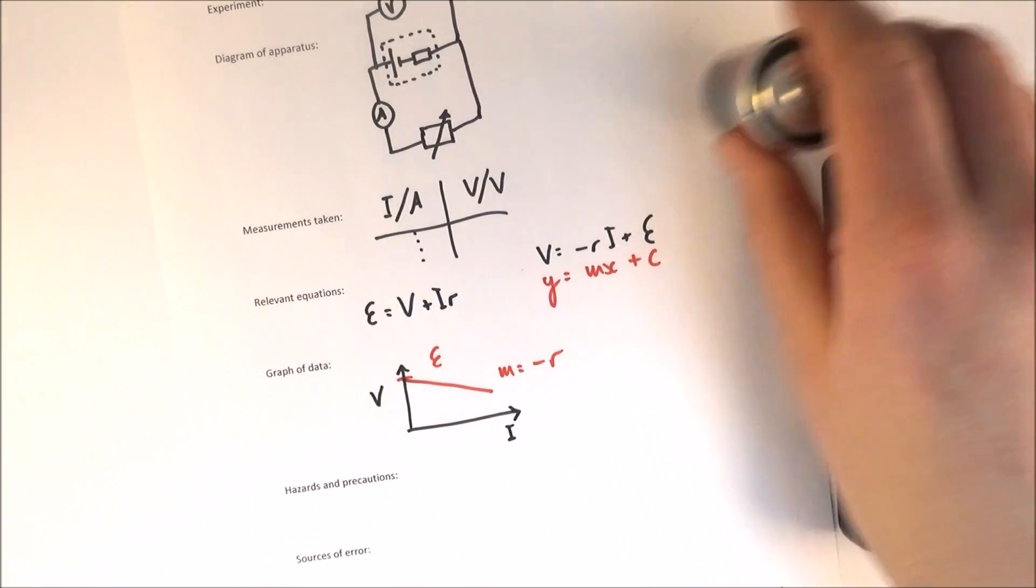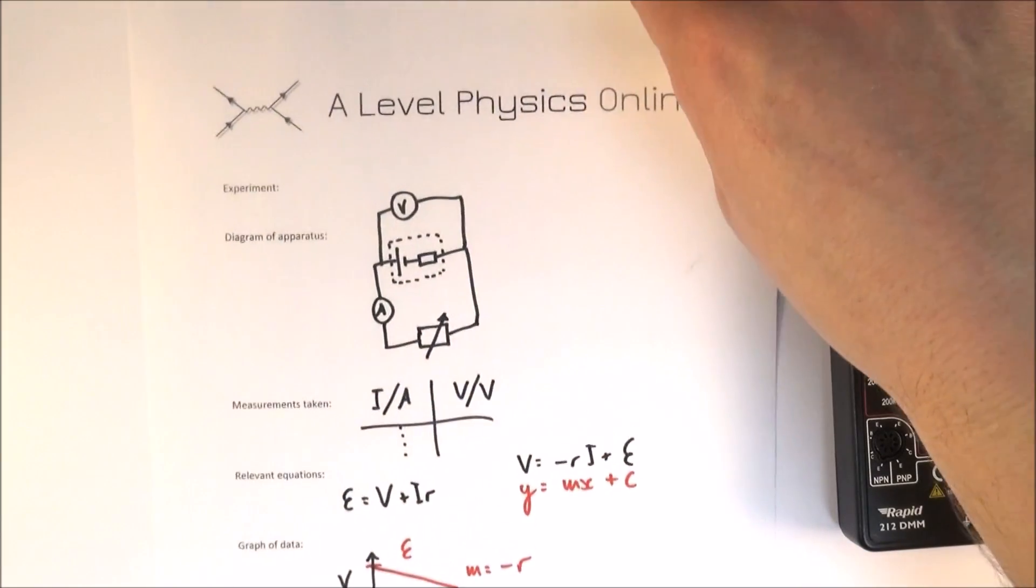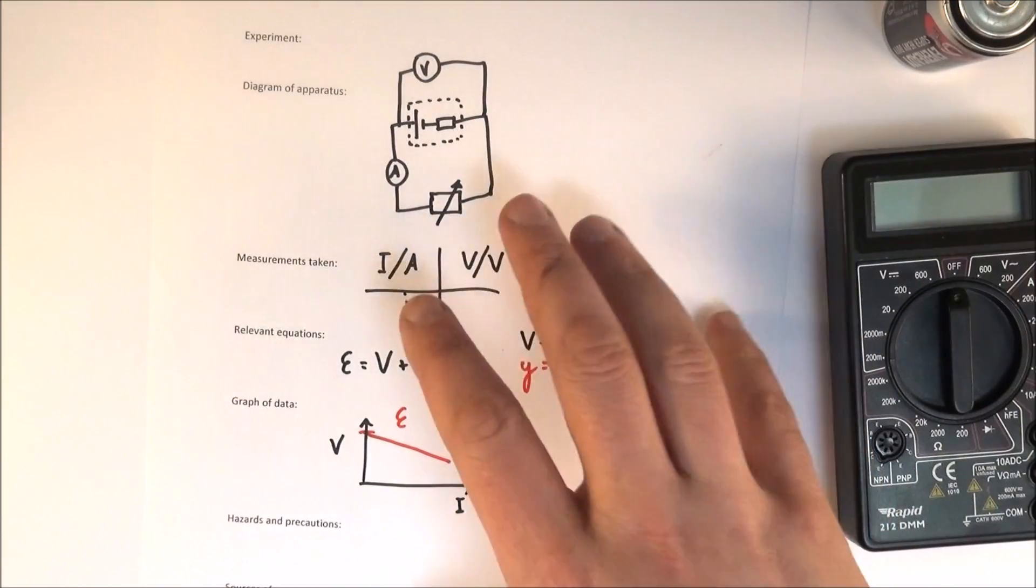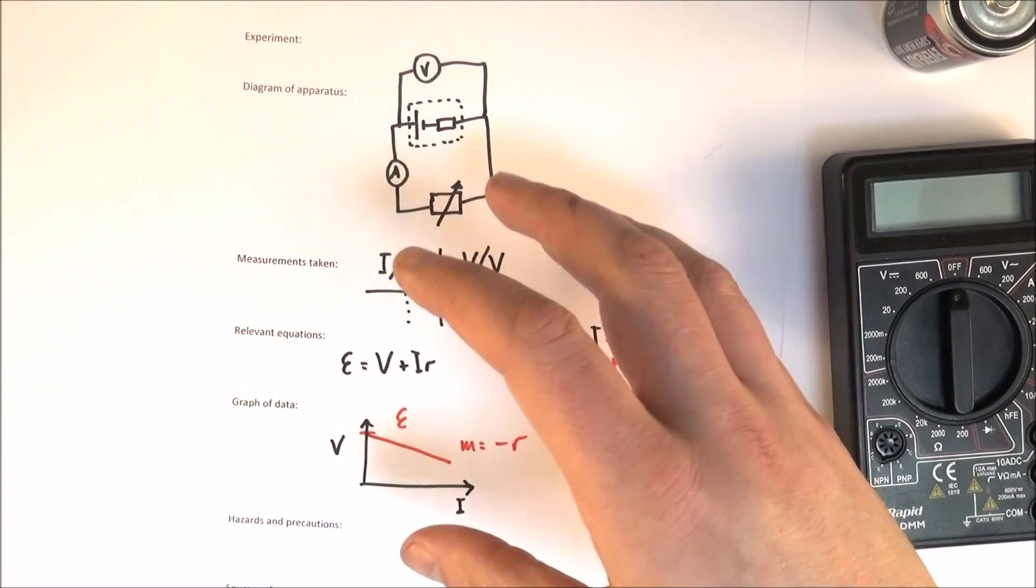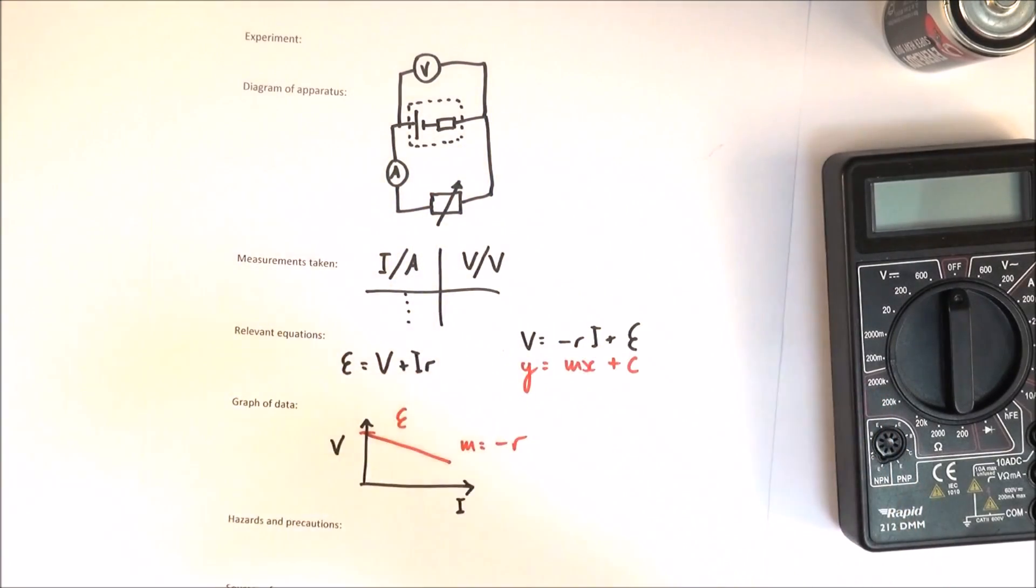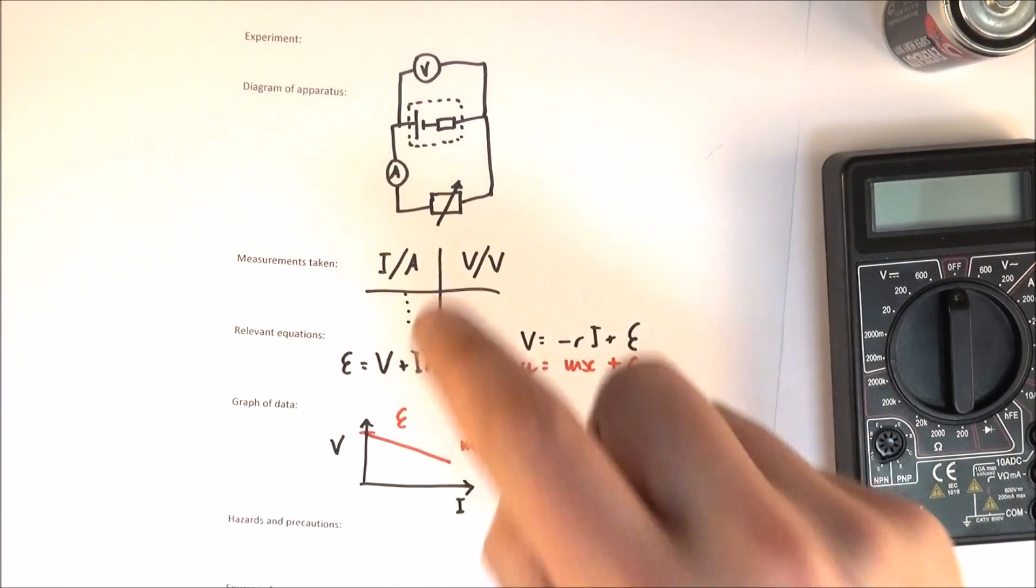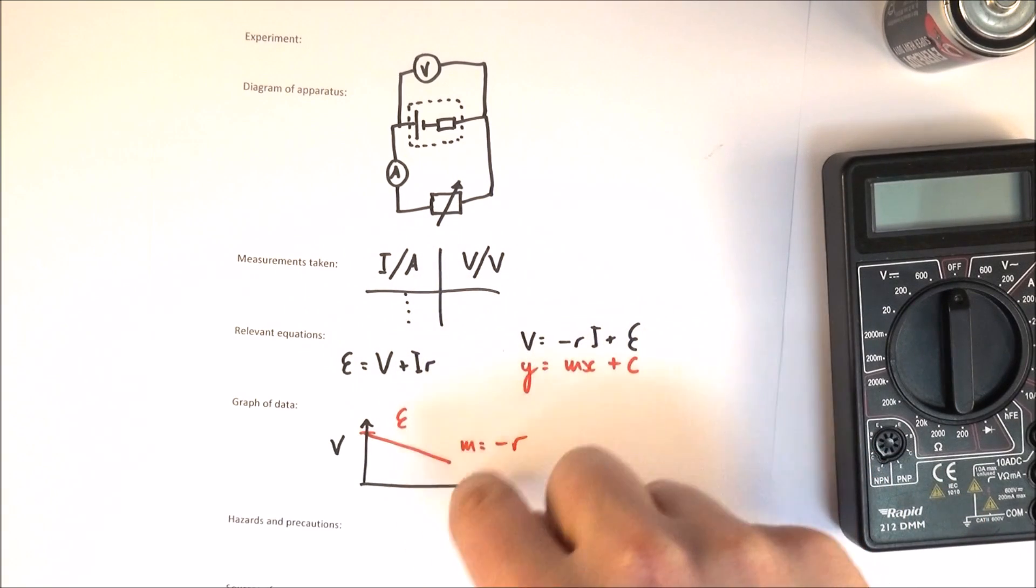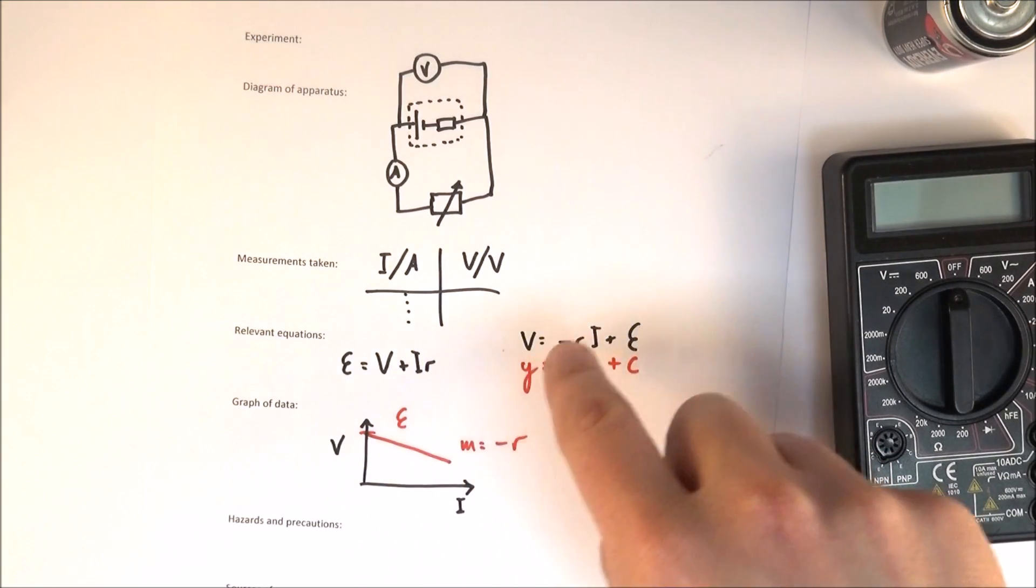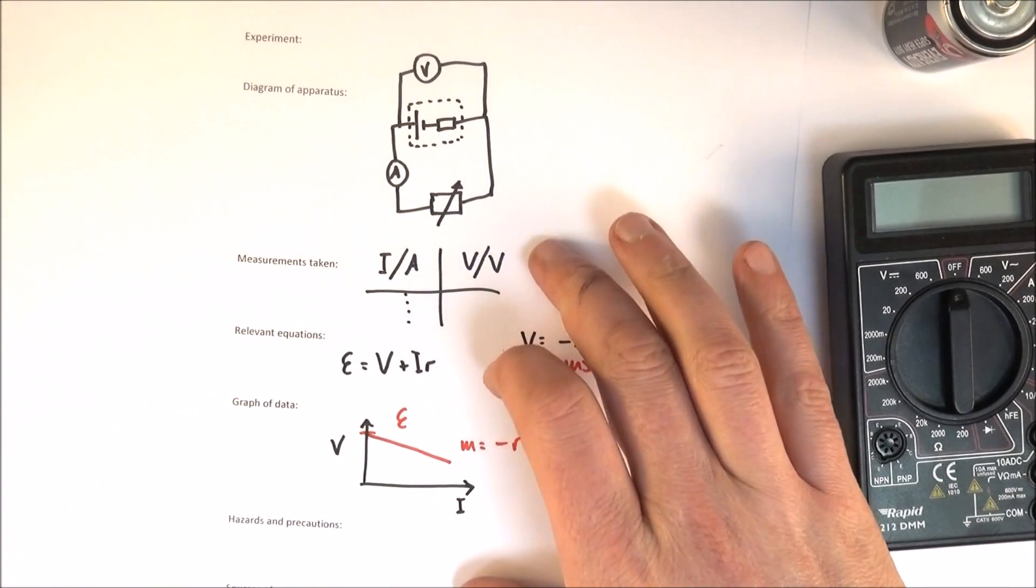So this kind of format here you need to think about for every kind of experiment especially the ones that you do for your practical endorsement but all the experiments that you do at A level physics. If you think about them like this that will help you really prepare and therefore you can sort of go into the exam knowing that you know how to answer questions about those experiments. How do you set up the equipment? What measurements do you take? What kind of data can you plot and how can you use that to find out a physical constant and then are there any hazards and also how can you improve that experiment?